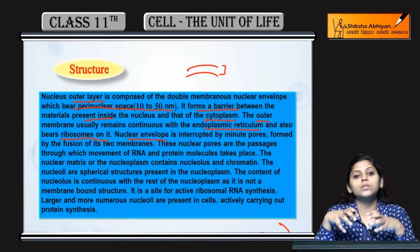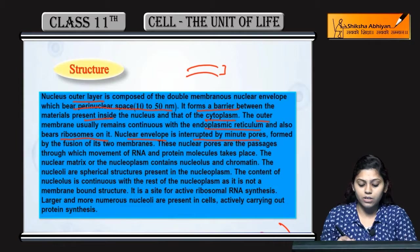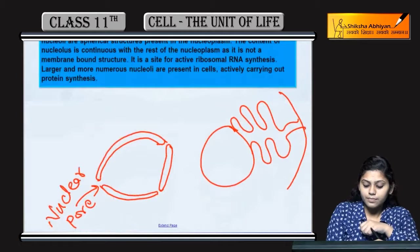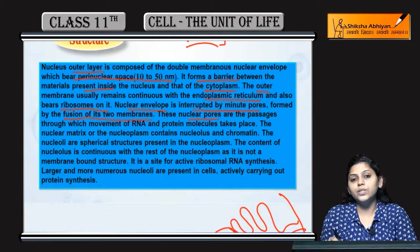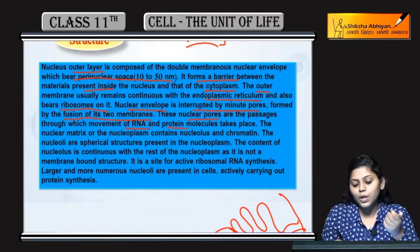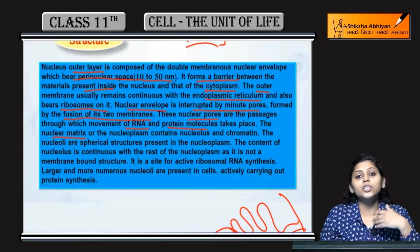Ribosomes bhi present hote hain. Nuclear envelope, means nuclear membrane, interrupted hoti hai by nuclear pores. Yeh nuclear pore do membranes ki fusion se banta hai. Nuclear pore kya karta hai? Selected materials ki passage karata hai — voh RNA ho sakti hai, protein molecules bhi ho sakti hai.